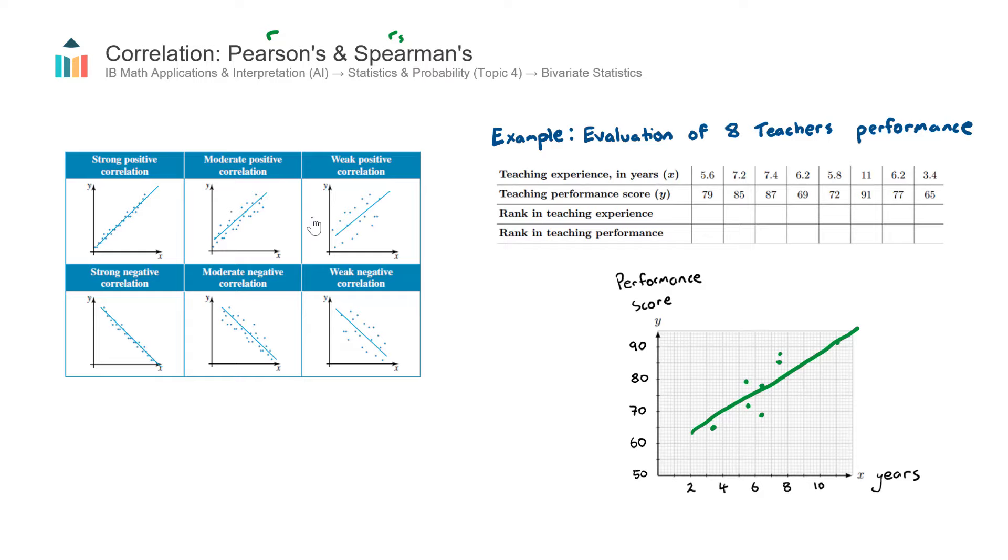But before we go and calculate that for this example on the right, let's just firstly touch on the different types of correlation descriptors that we can have. There are two main descriptors to mention any time you deal with correlation. And the first is the direction. So you can see here the top row here are all positive. So the line is sloping upwards. And then the proper way to think about that is as the independent variable increases, so does the dependent variable. So an example of that is, let's say, the height of a growing child. As the child increases in age, their height also increases. So both variables increase.